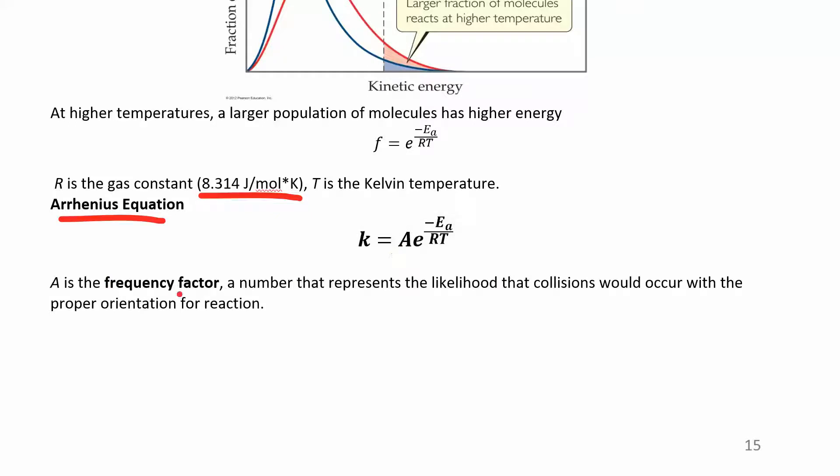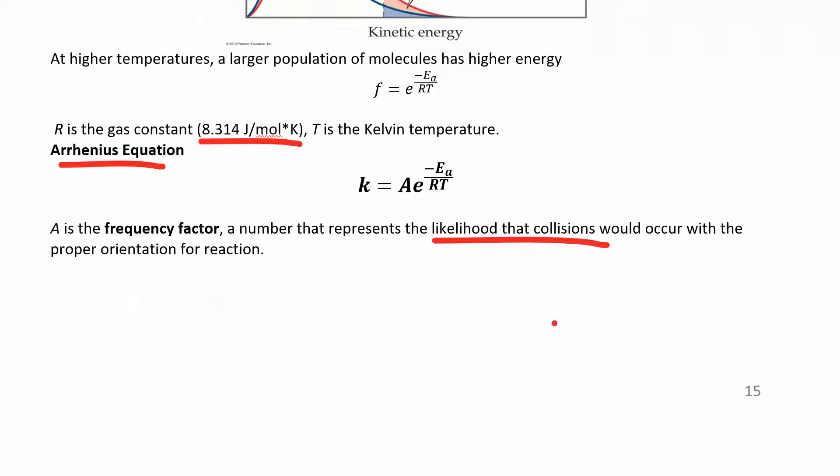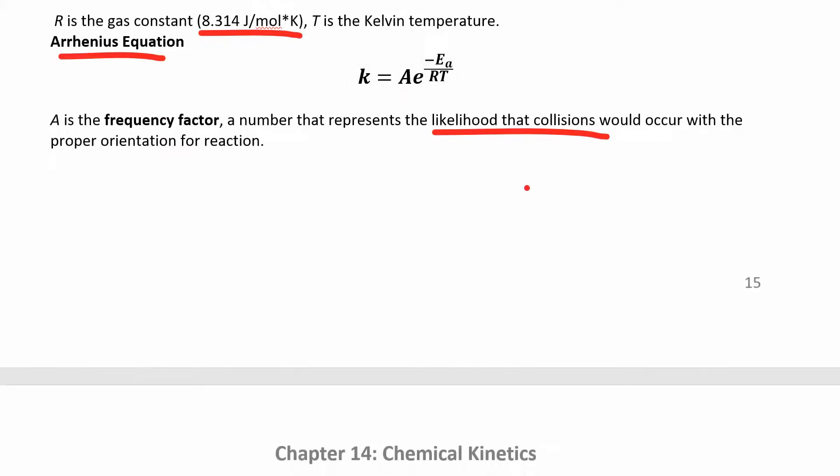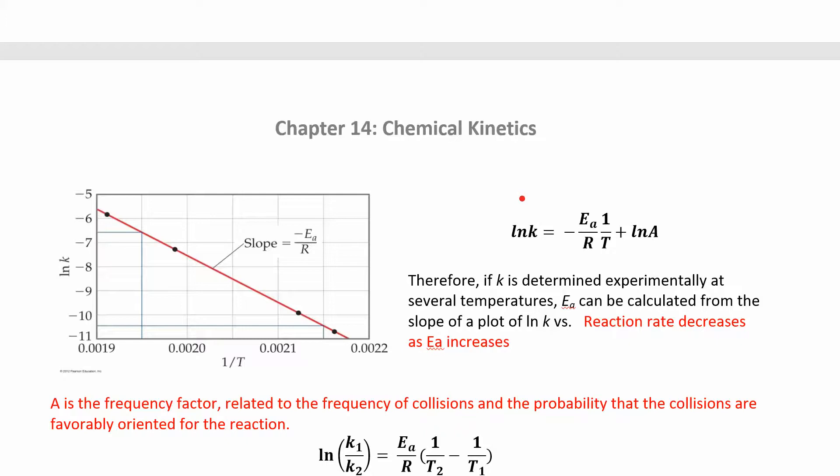This A is called a frequency factor or the pre-exponential, comes before the exponent. And it represents everything we've talked about in collision theory. The likelihood that the collisions are going to occur with a proper orientation. So it's just kind of like a constant there. We don't have to worry about that.